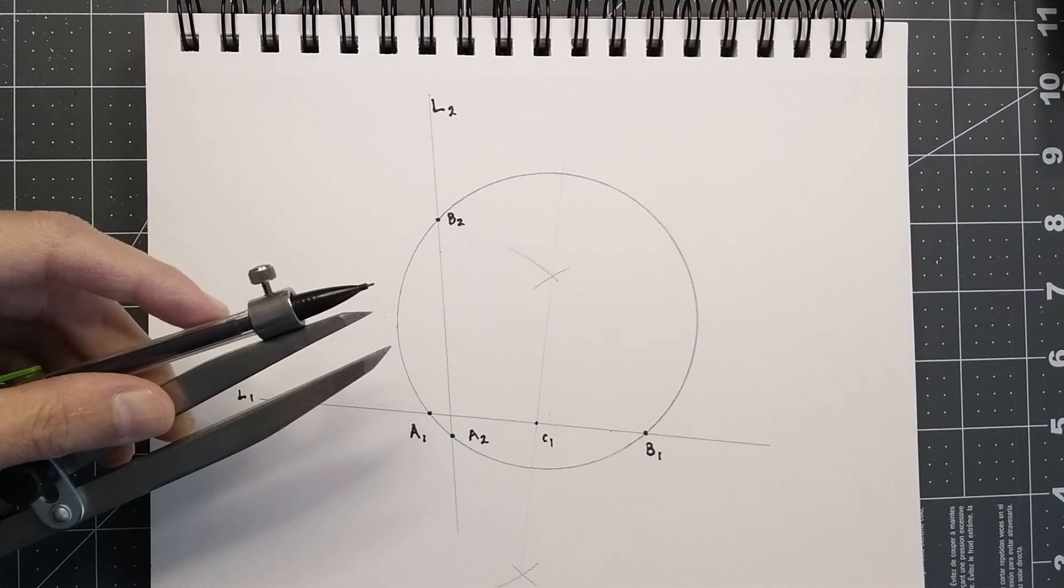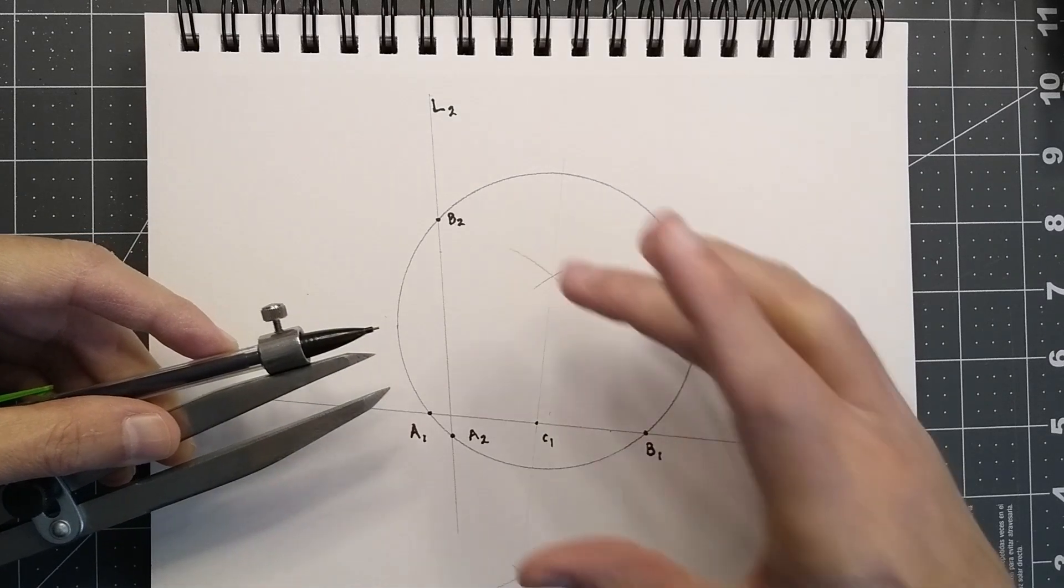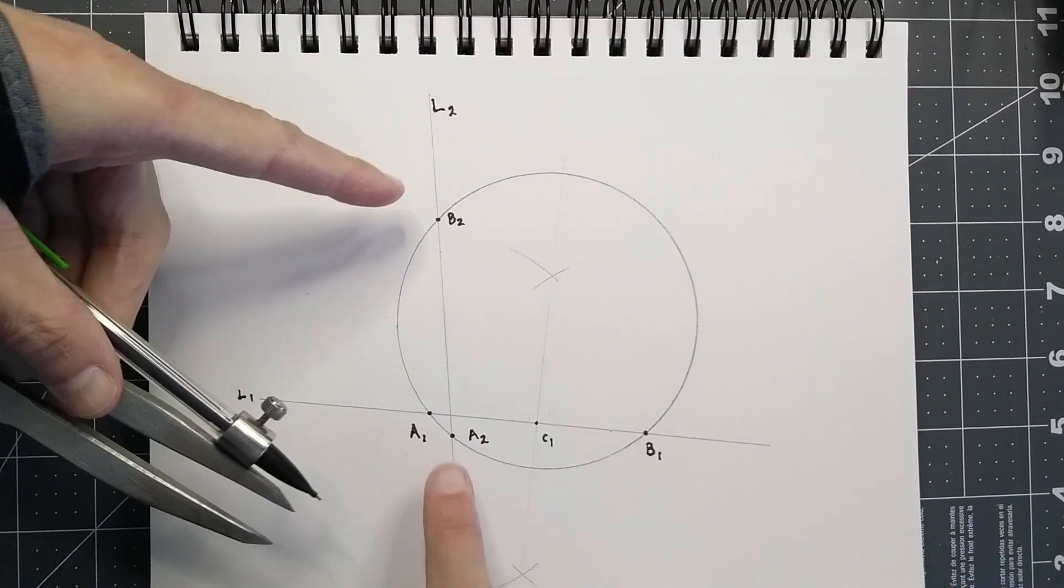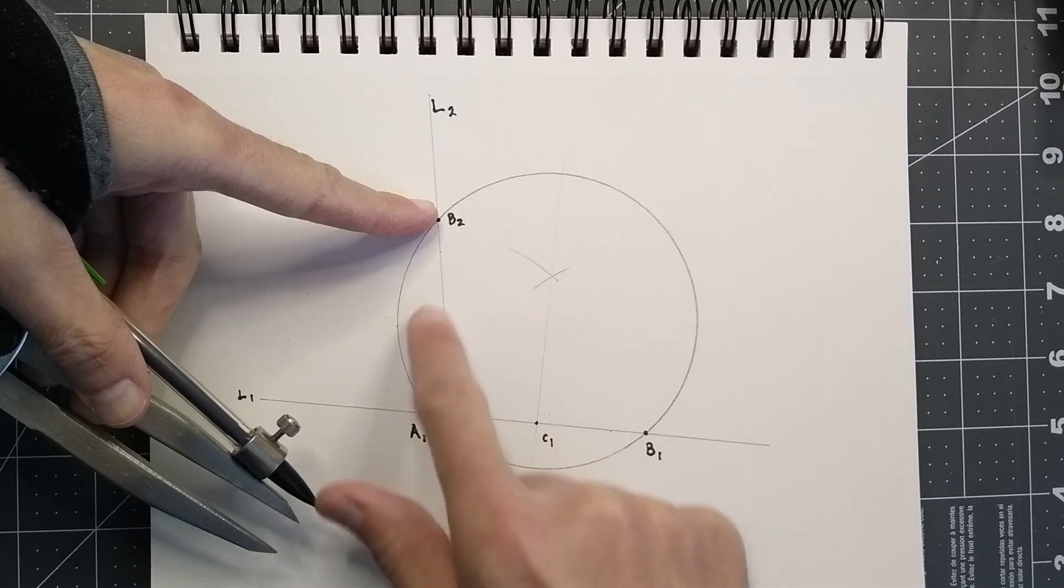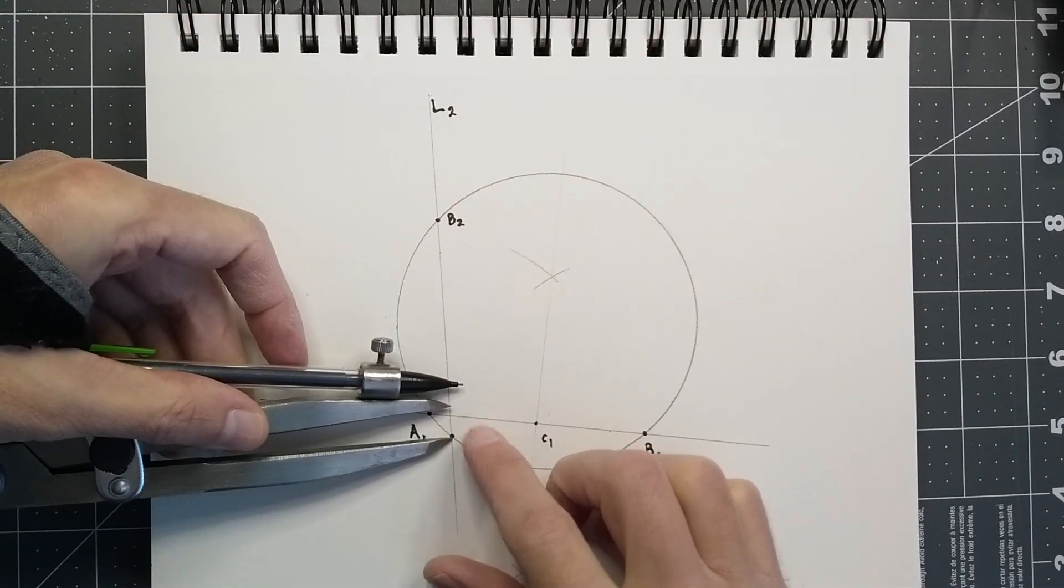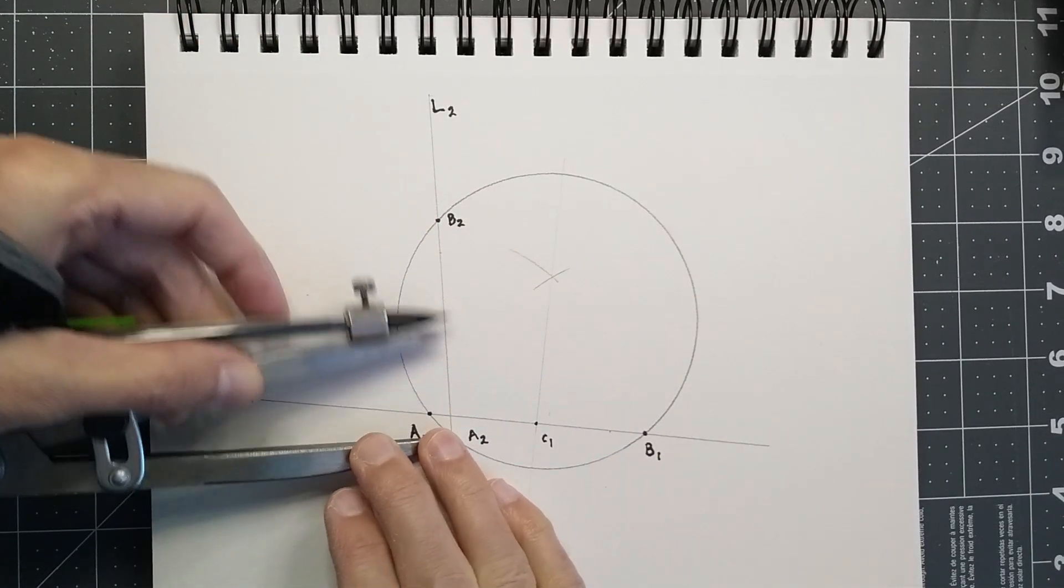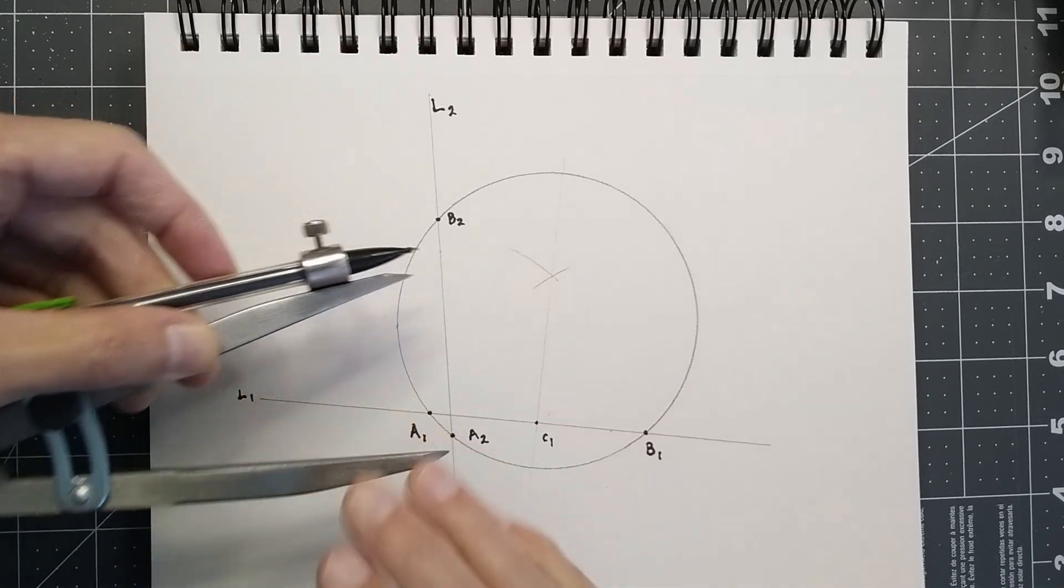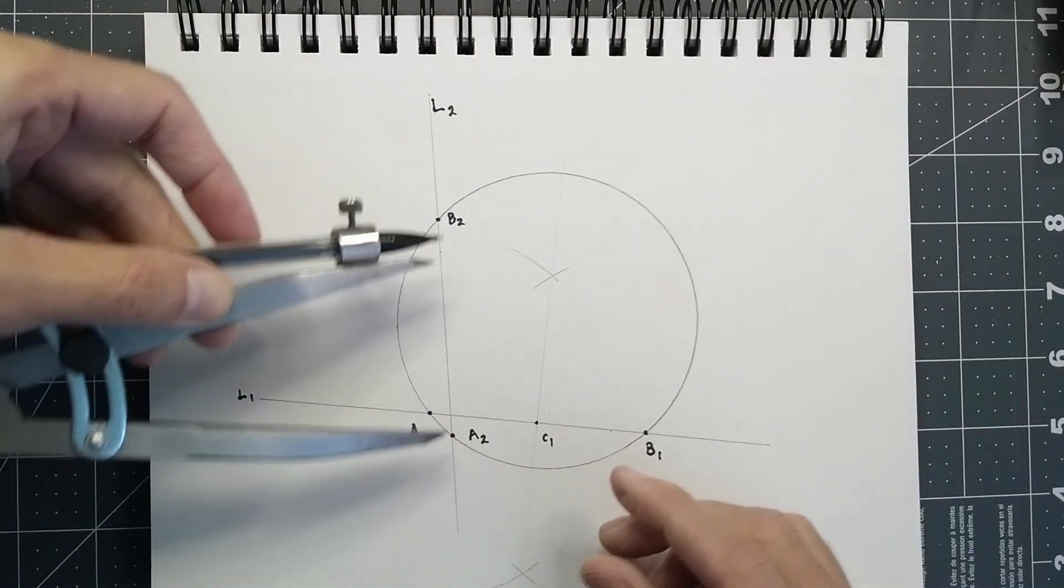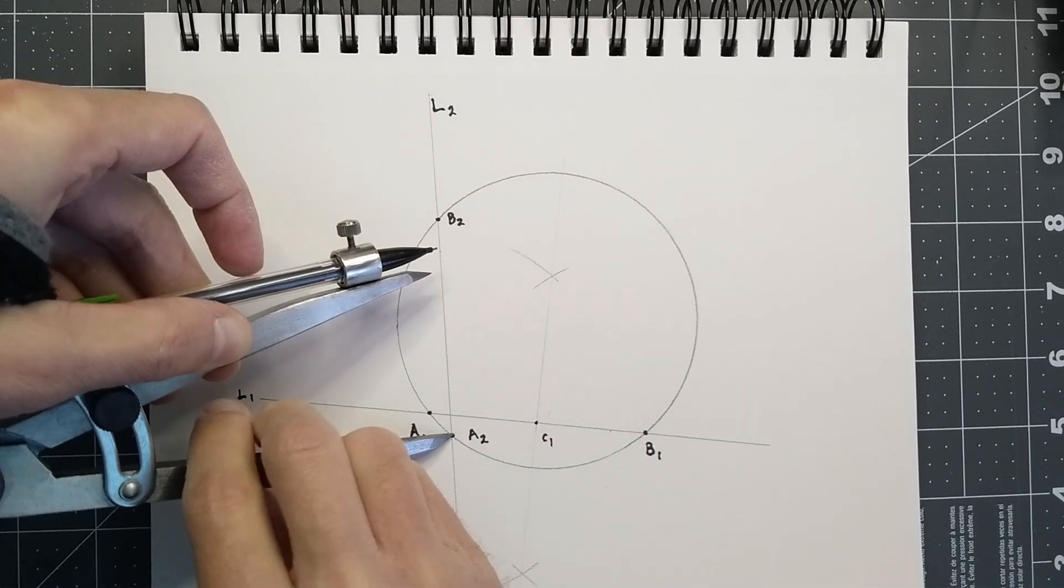And now we'll take our compass and set it to a width that's, once again, wider than the halfway point of L2, which will be somewhere in here. Put you out right about here and tighten you down. Because that's definitely wider than halfway.